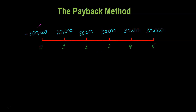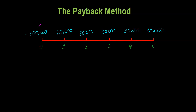If I ask you how long will it take for this investment to pay you back, you'll say: I'm dishing out $100,000 today. By the end of the first year, I'll get $20,000 — I'm still $80,000 down. By the end of the second year when I get another $20,000, now I've recovered $40,000 of the initial investment, still down $60,000. Then by the end of the third year, if I get $30,000, now I have recovered a total of $70,000 — still haven't recovered the full $100,000 because I'm still $30,000 down.